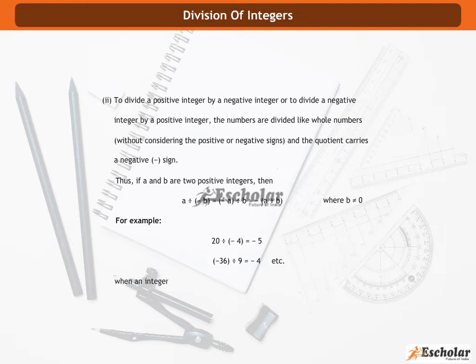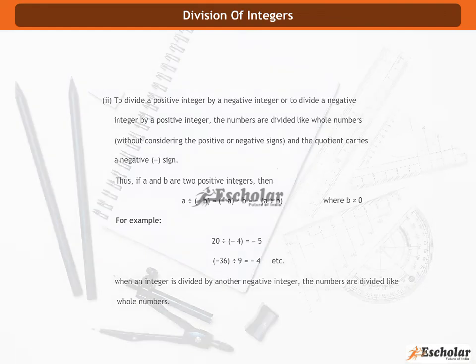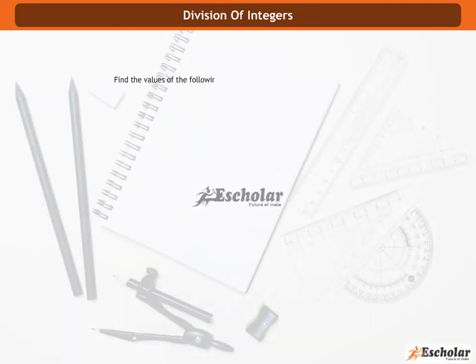When an integer is divided by another negative integer, the numbers are divided like whole numbers. Find the values of the following expressions: 26 divided by 13, minus 44 divided by 11, 36 divided by minus 2, minus 28 by minus 4.